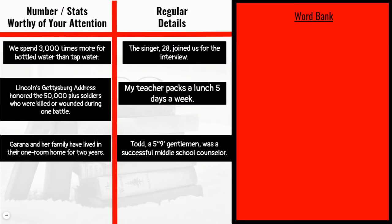Go ahead and update your answers now. Let's look at the category labeled 'regular details.' The first example mentions the age of a singer who is 28. Would this be more significant if the age of the singer was 14? Yes, it would, because this is a rare age for people to be part of an interview. The age of 28, however, is not significant. The second example states 'my teacher packs a lunch five days a week' — this is not a significant stat, since lots of people pack their lunch and many work five out of seven days a week, making five a common number. Finally, the last example mentions an average height of men. Not only is the number common, but it is not significant because it does not matter how tall you are to be a middle school counselor. So what can we learn from this? If a number seems common, average, or a regular detail, we do not need to pay as close attention to it. We use common sense to help us decide whether or not to stop, notice, and note.